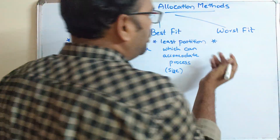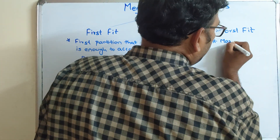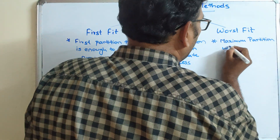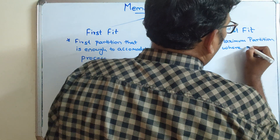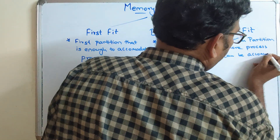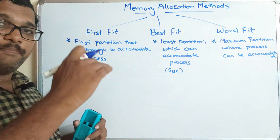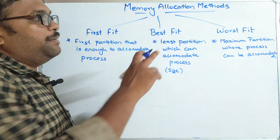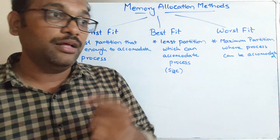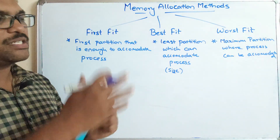Worst Fit is the opposite of Best Fit. Here we need to select the maximum — the largest — partition where the process can be accommodated. So in First Fit we pick the first available partition; in Best Fit the smallest sufficient partition; and in Worst Fit the largest available partition.